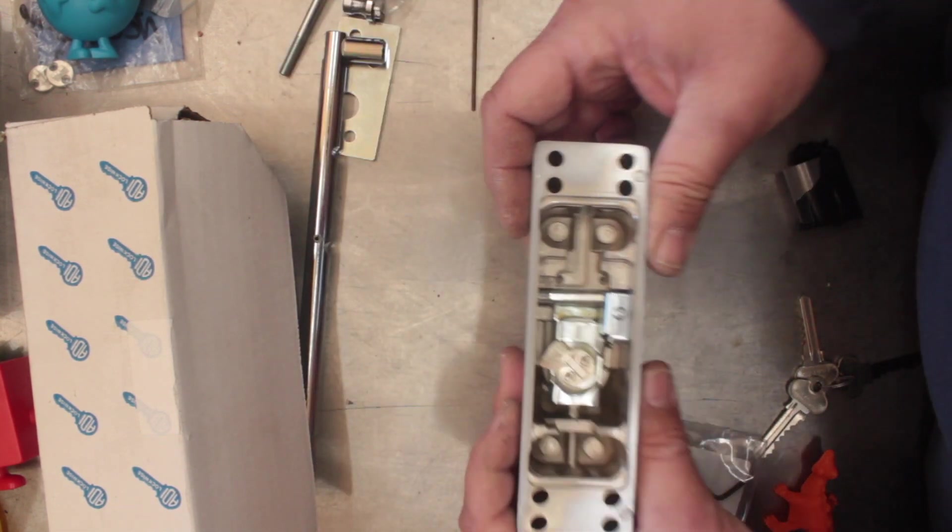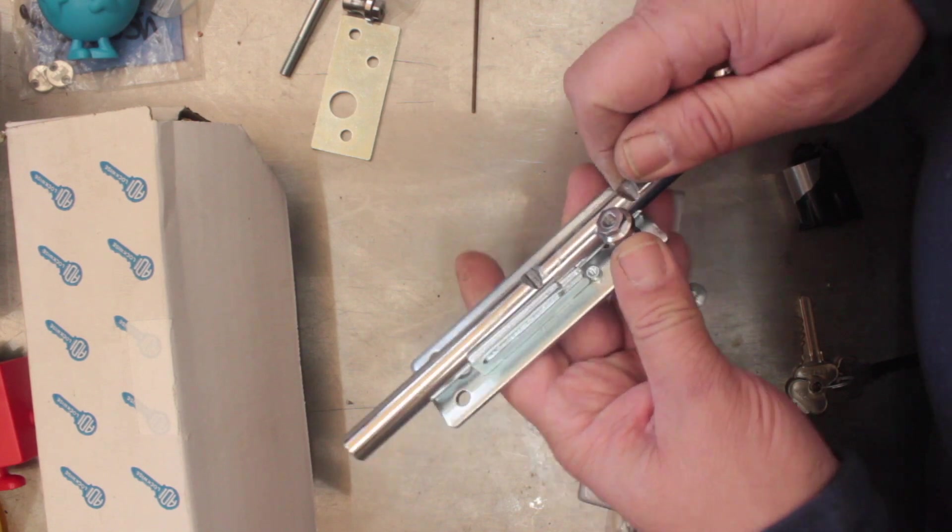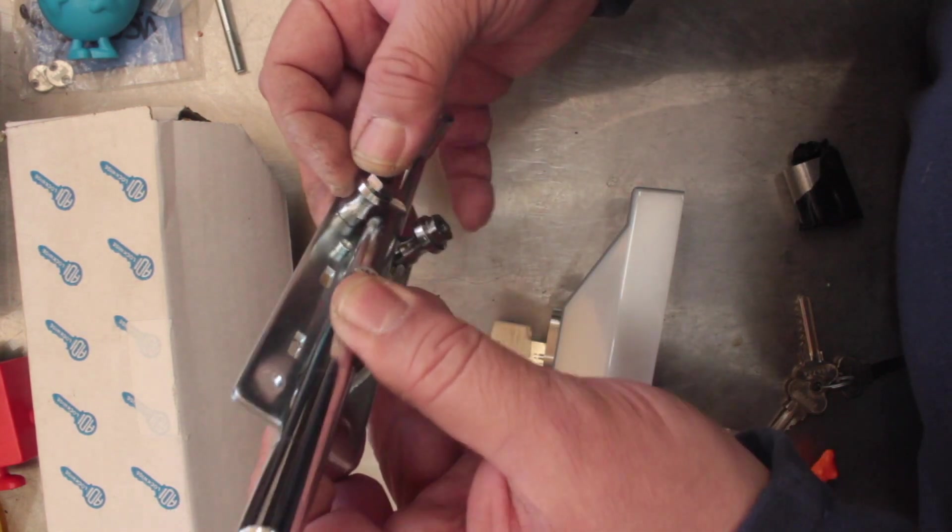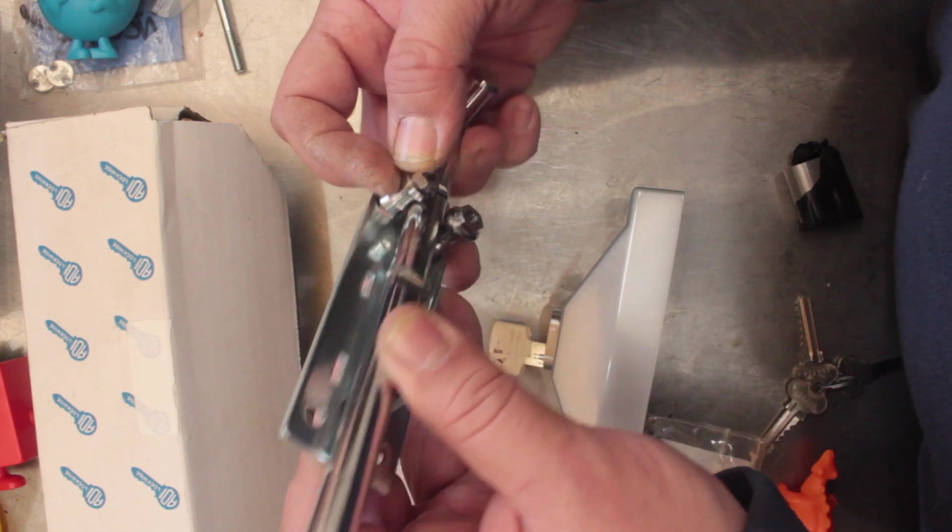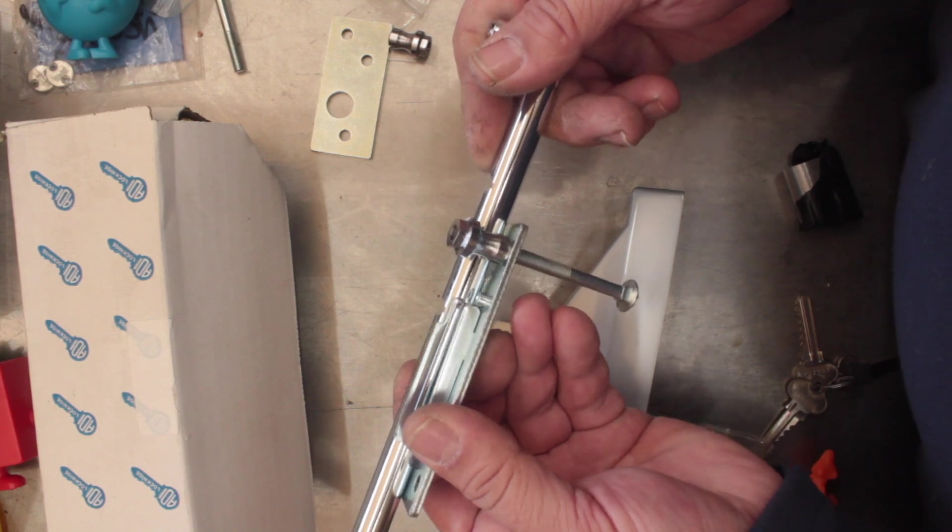And then you pull it along the channel. This pin will slide along this channel here. Once you've got that bolt out, the actual lock will come off in your hand. Reason being is that when this bolt is locked into the lock, it's actually held in place by these runners.